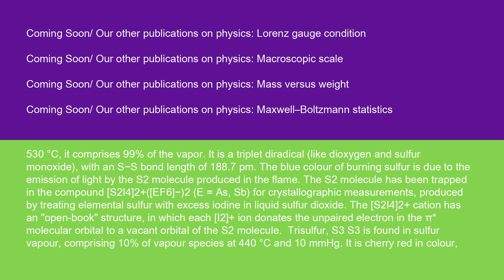The blue color of burning sulfur is due to the emission of light by the S2 molecule produced in the flame. The S2 molecule has been trapped in the compound [S2I4]²⁺[EF6⁻]2 (E = As, Sb) for crystallographic measurements, produced by treating elemental sulfur with excess iodine and liquid sulfur dioxide. The [S2I4]²⁺ cation has an open-book structure in which each I2⁺ ion donates the unpaired electron in the π* molecular orbital to a vacant orbital of the S2 molecule.